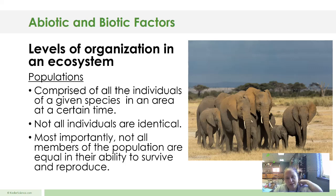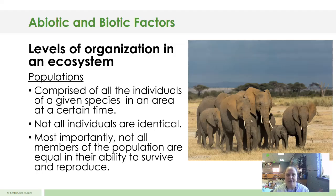Most importantly, not all members of the population are equal in their ability to survive and reproduce. So you have that survival of the fittest, competition going on, whether or not they can reproduce and keep their species alive. All of that plays an important role in an ecosystem. But even if that animal or plant may be weak, it's still in that species. Even though it might have something that hinders reproduction, it is still that species.